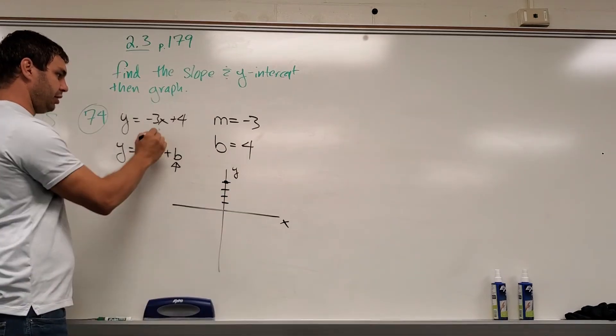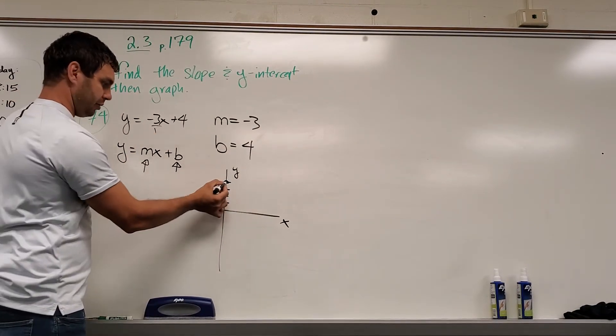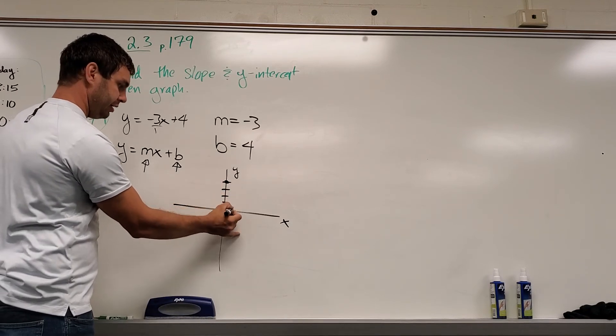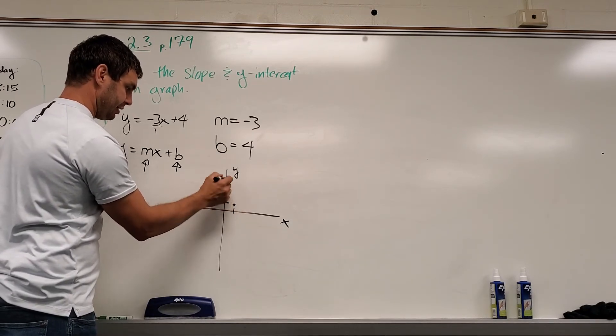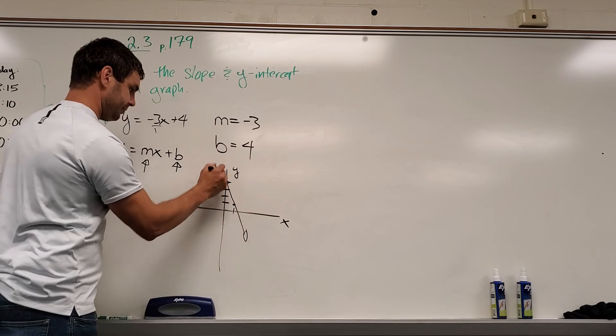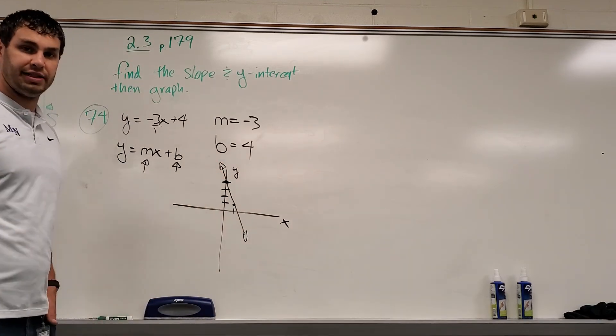And then the slope says to go down 3 and over 1 if we make that a fraction. So from that point, go down 1, 2, 3, and over 1, and connect your dots. That's how you find it and graph it.